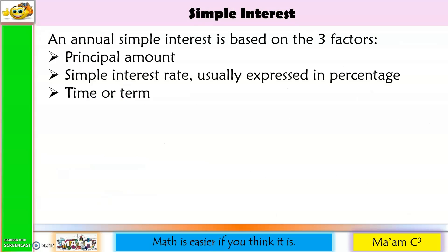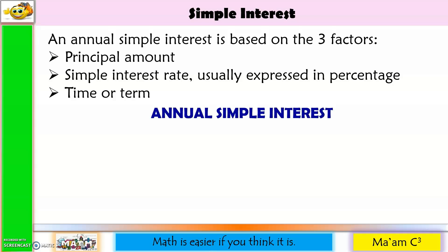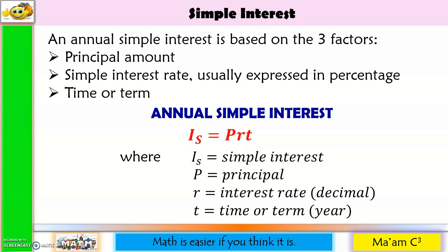Simple interest is based on three factors: principal amount, simple interest rate usually expressed in percentage, and the time or term. It is given by the formula I sub S equals PRT, where I sub S is the simple interest, P is the principal, R is the interest rate expressed in decimal, and T is the time or term expressed in years.